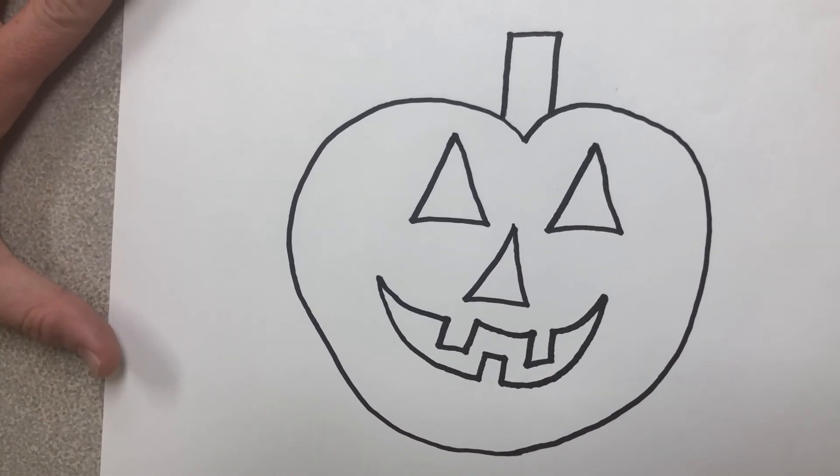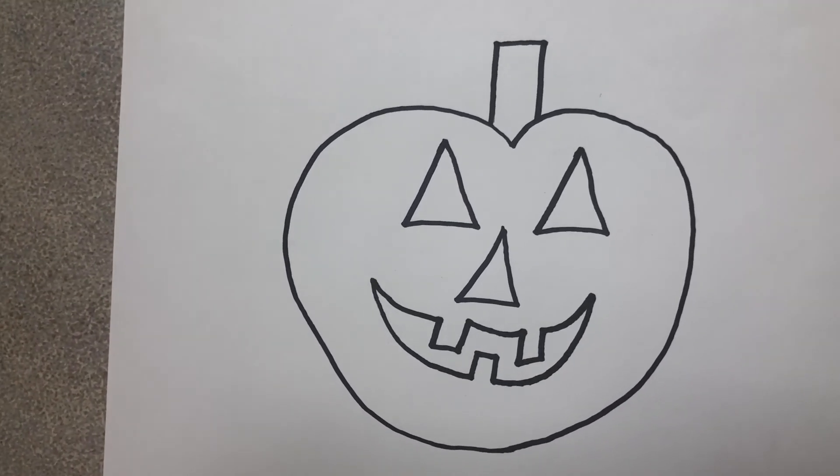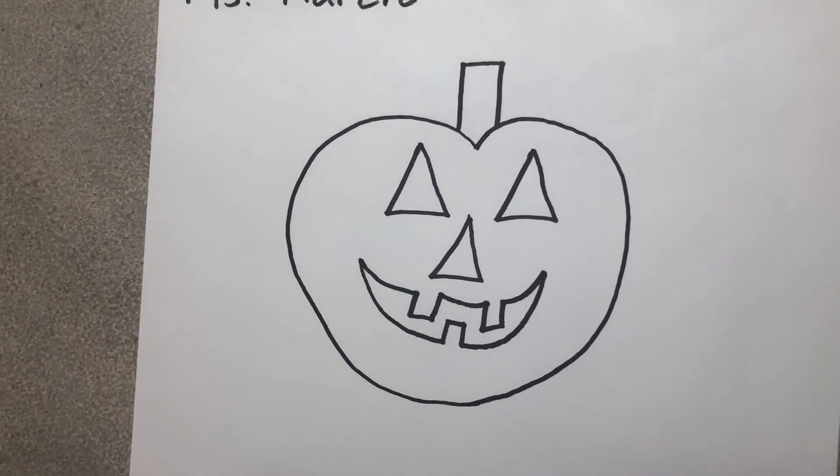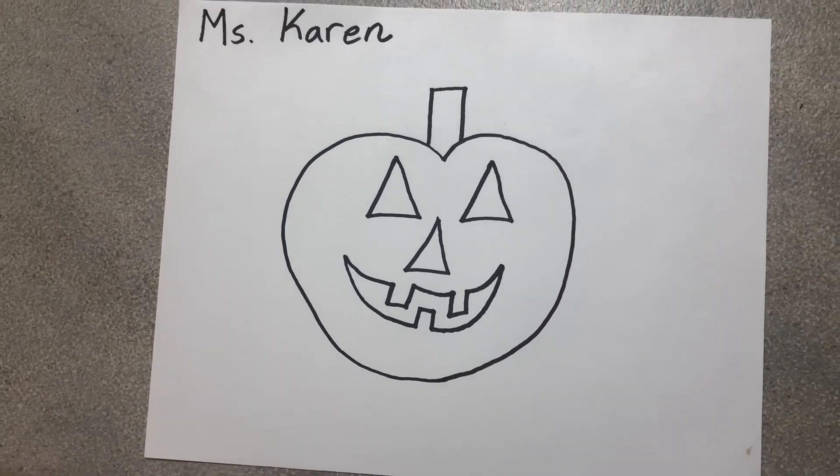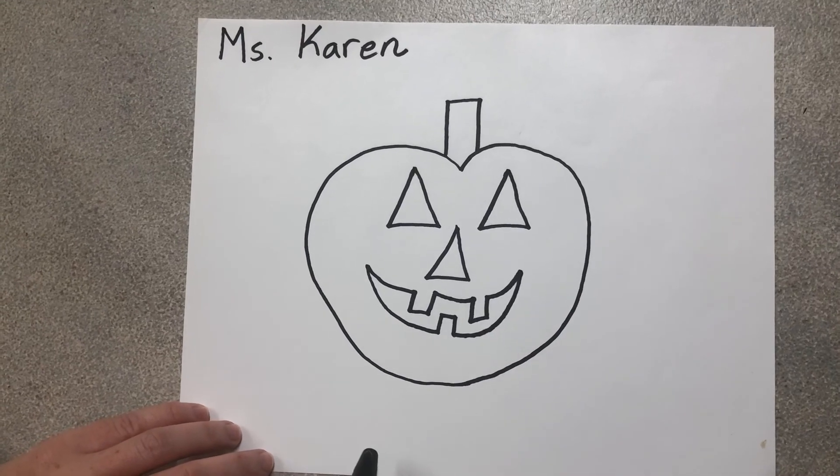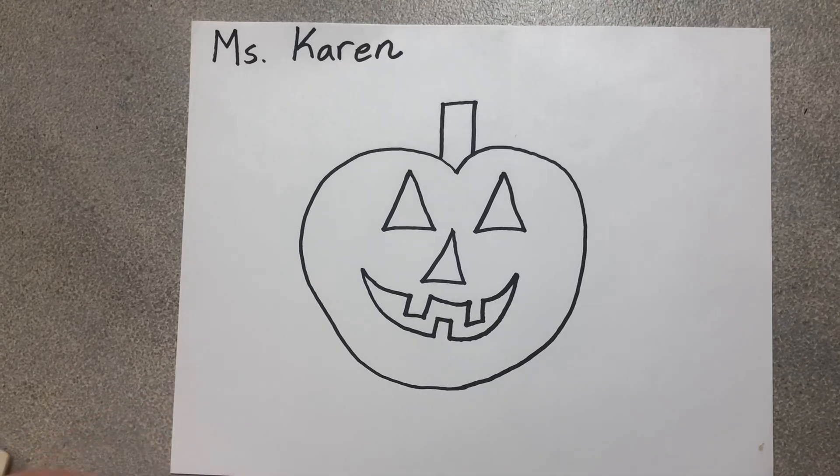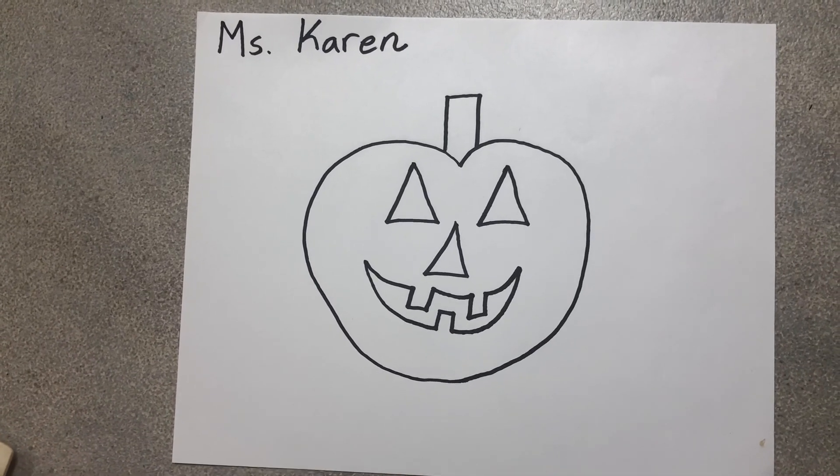It's a jack-o-lantern! Now, you can go ahead and color your jack-o-lantern. Remember, a jack-o-lantern is made out of a pumpkin, so you can color your jack-o-lantern orange. And then you can either make the eyes black or yellow like light on the inside. That's up to you. Have fun!